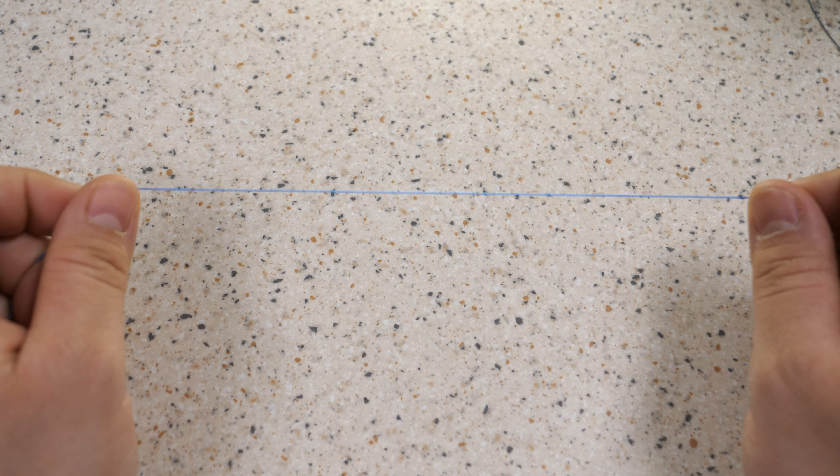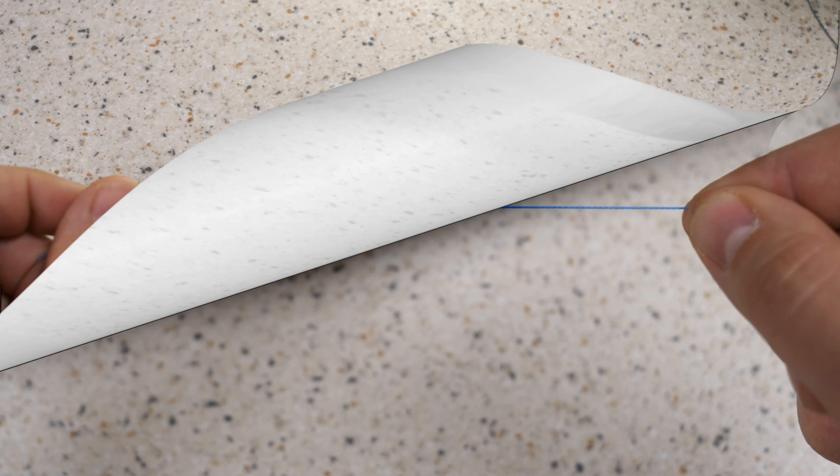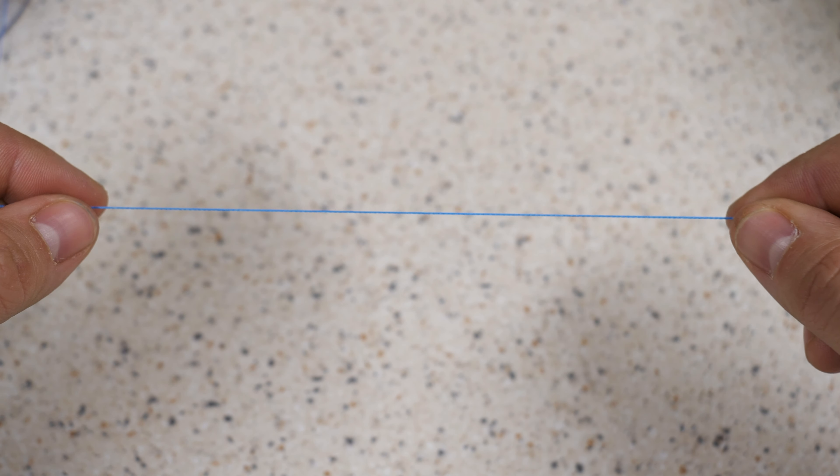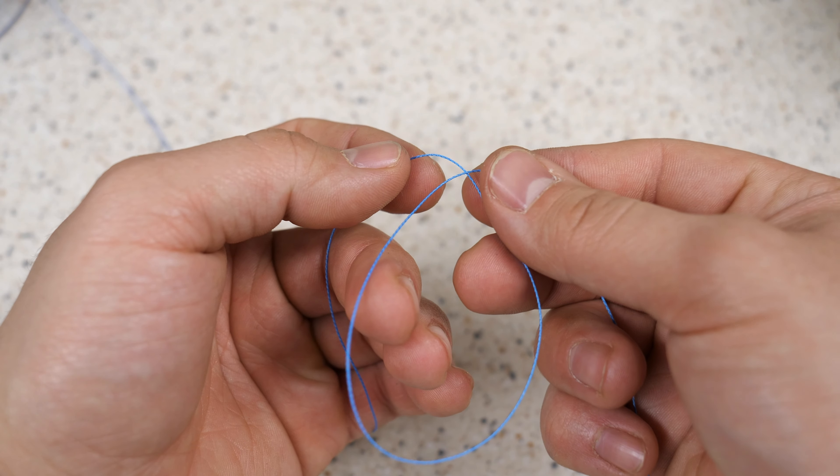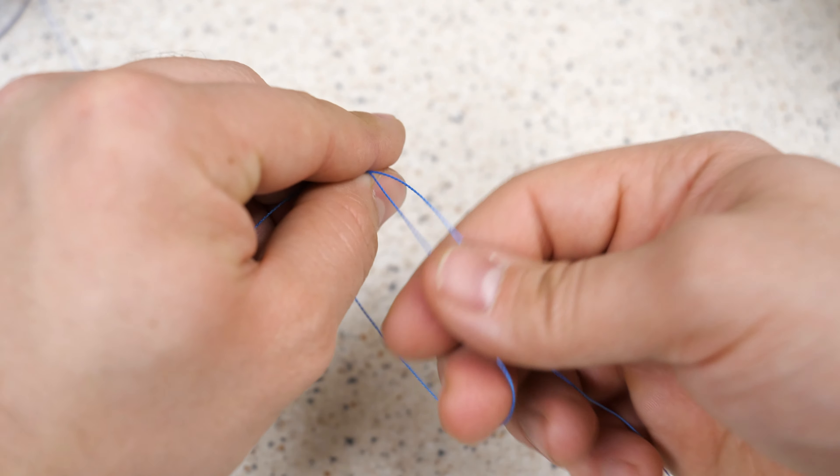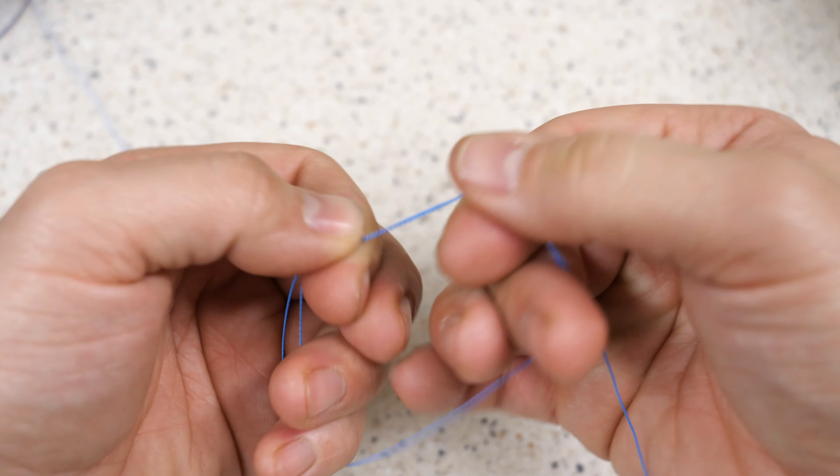Today I'm going to show you how to make the dropper loop. First step, create a loop and make it as big as your hands.